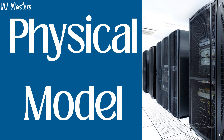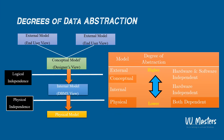In the previous video we talked about data abstraction and degrees of data abstraction. First of all, we talked about the external model — the most abstract level — which is the end user view. After that we have the conceptual model, which is a little less abstract than the external model but focused on the designer's view.